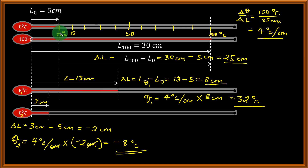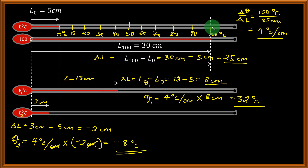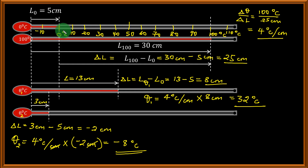So we can label from 0 to 10, then 20, 30, 40, 50, 60, 70, 80, 90, and 100. We can even maintain this spacing and mark a point at 110 degrees Celsius, and come below 0 to mark minus 10 degrees Celsius. We can also divide each 10-degree space into 10 smaller divisions.